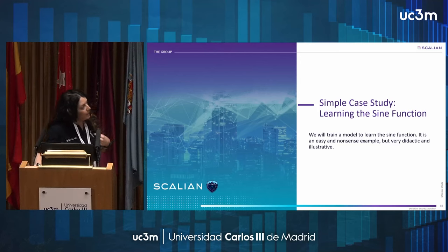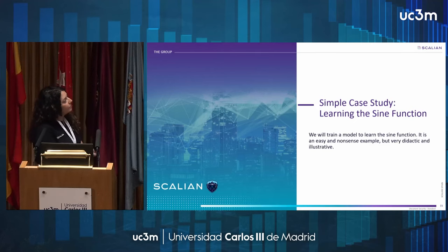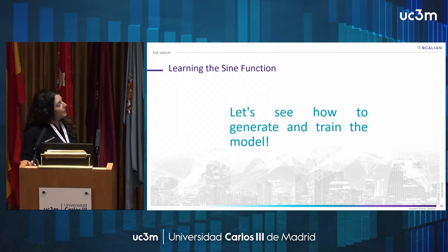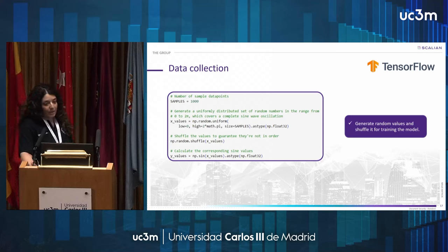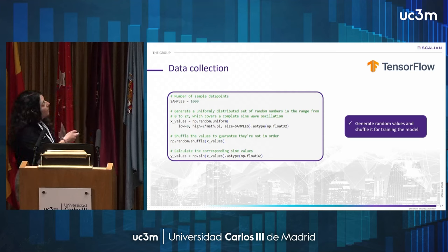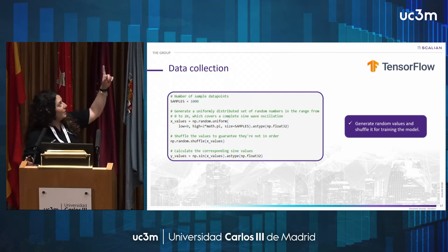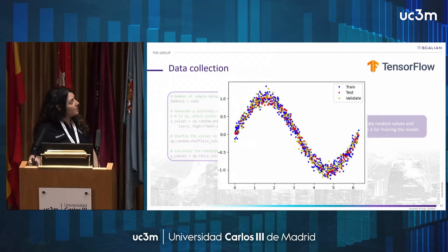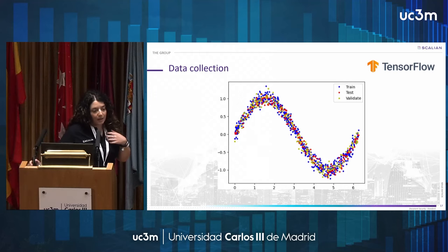In this section, we are going to explain step by step how you can use the presented tools to train our machine learning model. First, let's see how to generate and train the model. Since we already know the sine function well, we generated the data ourselves to train the model. We generated 1,000 random values. In this graph, we show the representation of the training, testing, and validation data used to train the model.